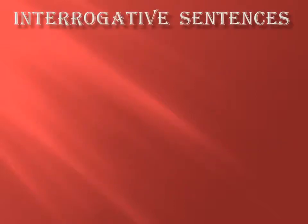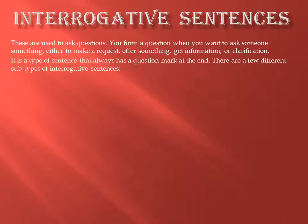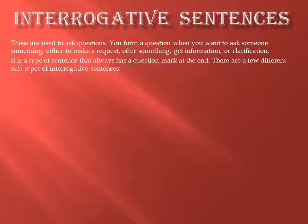The second type is interrogative sentences. By the name itself you can know — interrogative means question sentences. These are used to ask questions. You form a question when you want to ask someone something — either to make a request, offer something, get information or clarification. It is a type of sentence that always has a question mark at the end. There are a few different subtypes of interrogative sentences which we will be studying further.